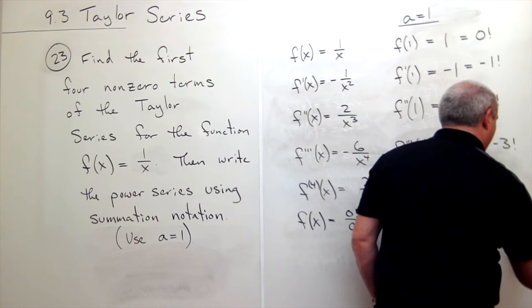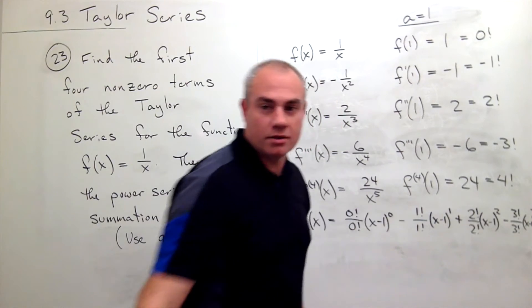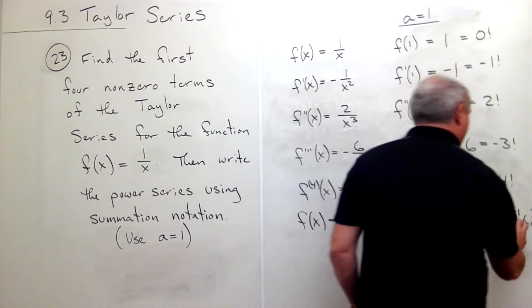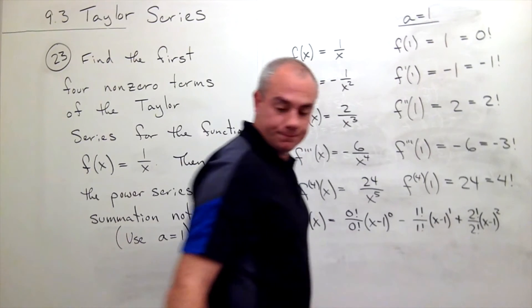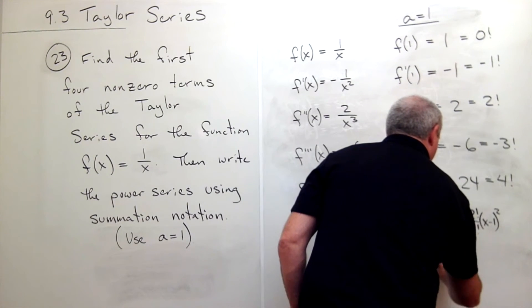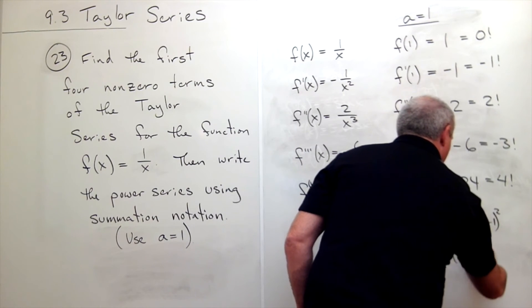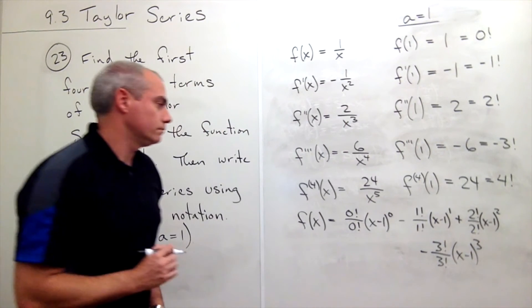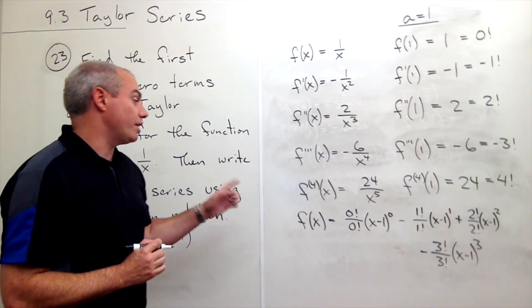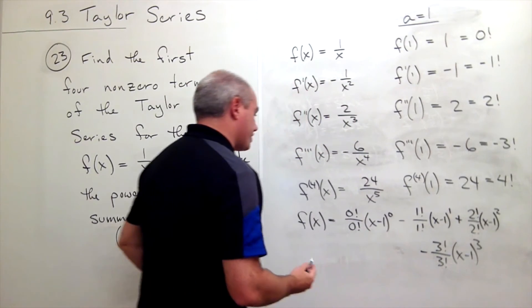And I think that's just off the screen, so let me write it down a line lower. So that's minus 3 factorial over 3 factorial times x minus 1 cubed. Okay, so here are the first four terms. Of course those can be cleaned up quite a bit, right.